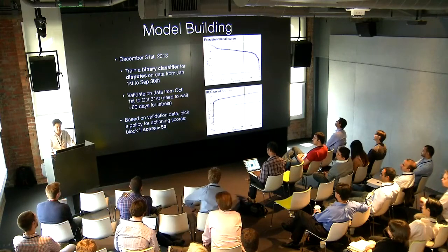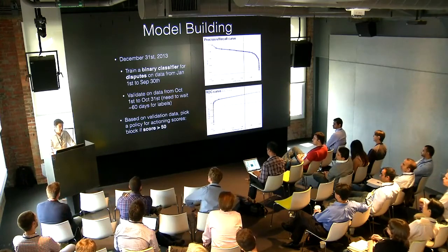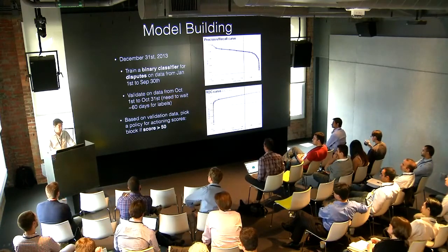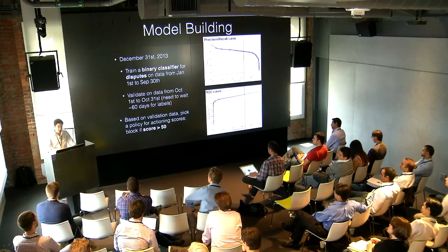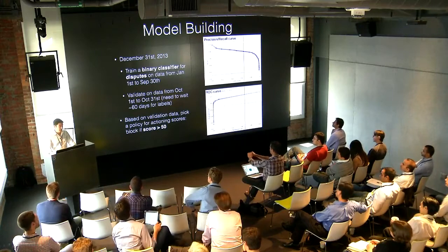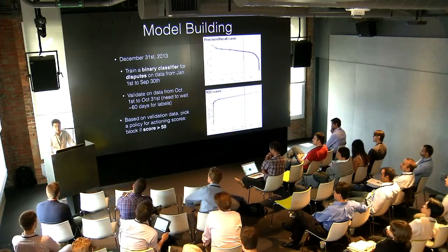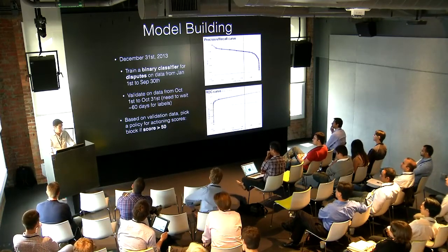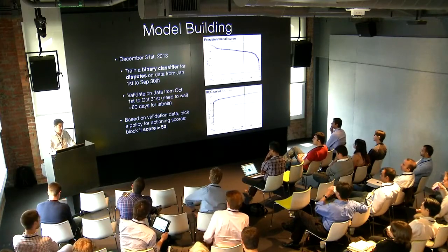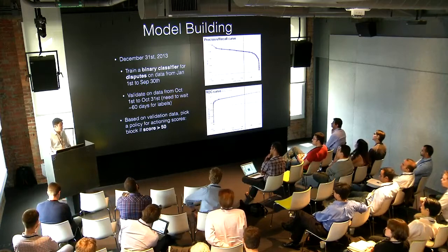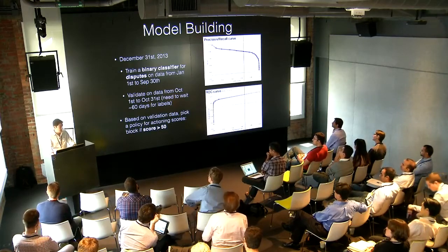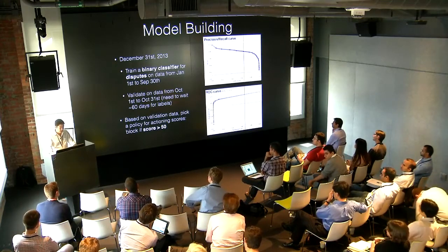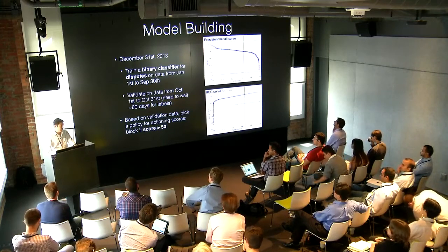Is everyone familiar with precision and recall? Precision is: of all the charges we think are fraud, what fraction actually are? Of all the charges we block, what fraction are actually fraud? Recall is: of all the charges that are actually fraud in the world, what fraction are we catching? Because we're blocking charges in the charge flow with no asynchronous human review, we definitely value precision even at the expense of recall. We built this model, have a policy to block scores above 50, and put it into production.